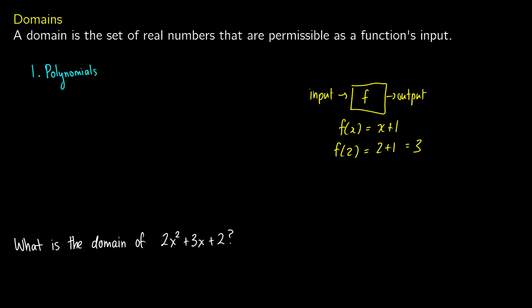But there are some cases where we cannot. For example, if f of x is equal to 1 over x, we can't pick f of 0, because then we get 1 divided by 0, and we cannot compute that. So we're going to take a look at different types of functions and the domains that they can have.